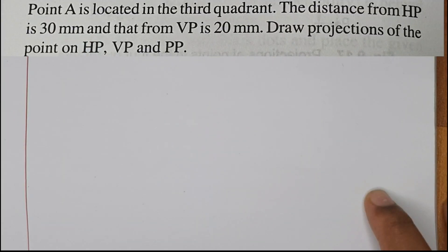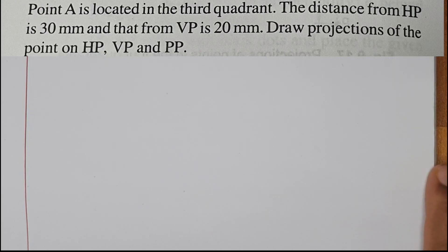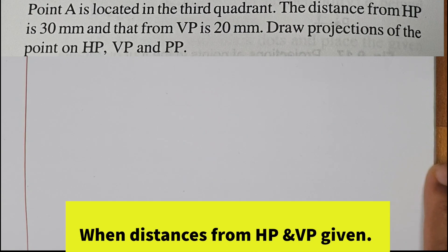Next question: Point A is located in the third quadrant. The distance from HP is 30 mm and that from VP is 20 mm. Draw projections of the point on HP, VP, and profile plane.